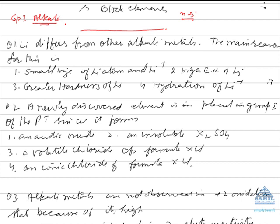Question 1: Lithium differs from other alkali metals. The main reason is that the first element of each group differs from the rest due to its small size and high charge density — a greater charge-to-size ratio. As a result, its polarizing power increases, making its properties different from the rest of the elements.